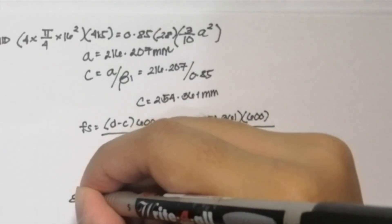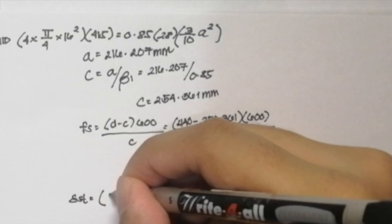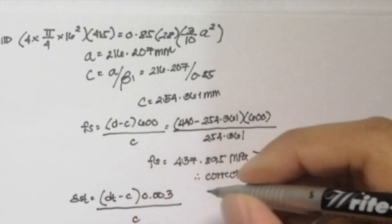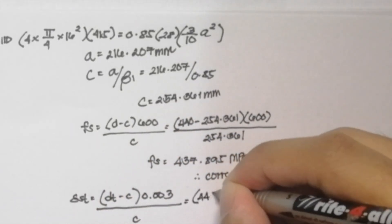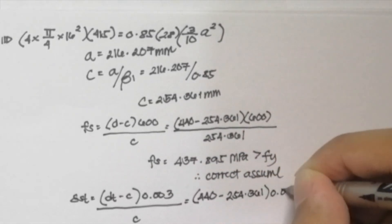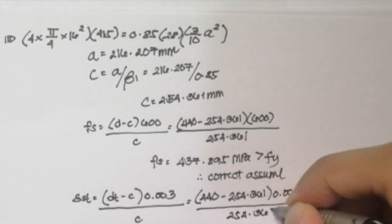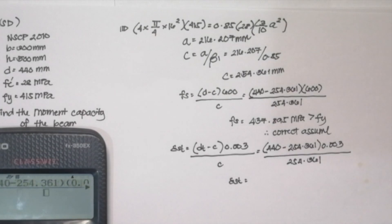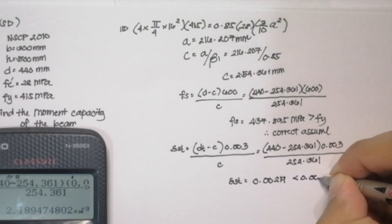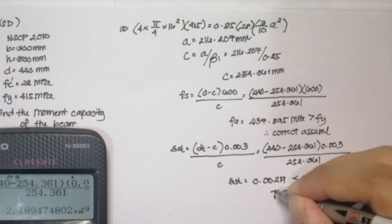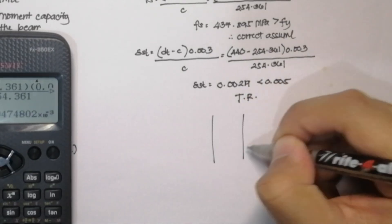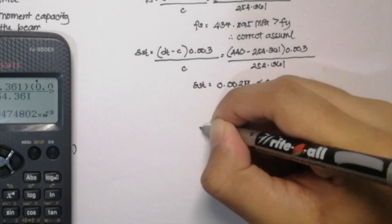Next, solve for the strain in the steel: εt = (DT − C)·0.003 / C. Since we only have a single layer, DT = D = 440mm. So εt = (440 − 254.361)·0.003 / 254.361 = 0.00219. This is less than 0.005 and greater than the strain at Fy of 0.002, so the section is in the transition region.